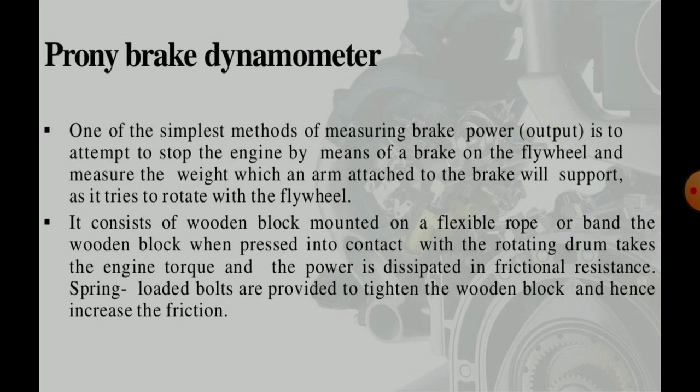One of the simplest methods to measure brake power output is to attempt to stop the engine by means of a brake on the flywheel and measure the weight on the arm attached to the brake with which it can be supported. As it tries to rotate with the flywheel, it consists of a wooden block mounted on a flexible rope or band, which when pressed into contact with the rotating drum dissipates engine torque and power as frictional resistance. A spring-loaded mechanism locks the moment on the wobbling side to tighten the wooden block.